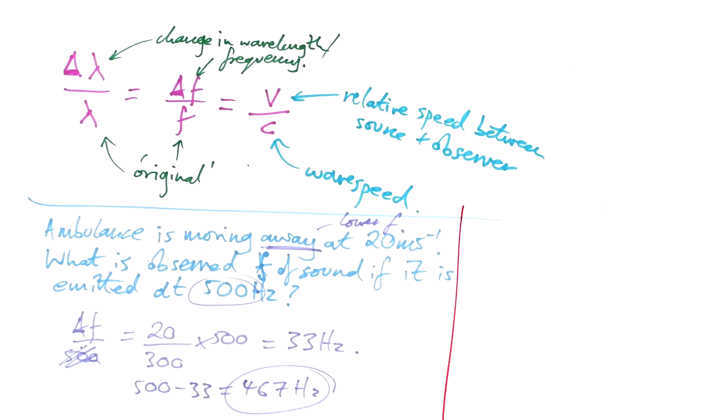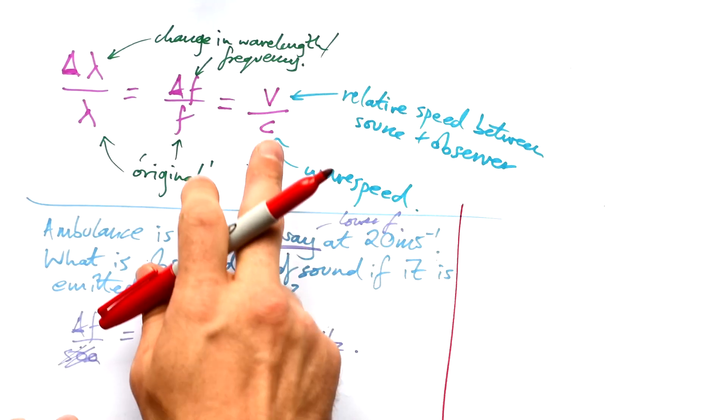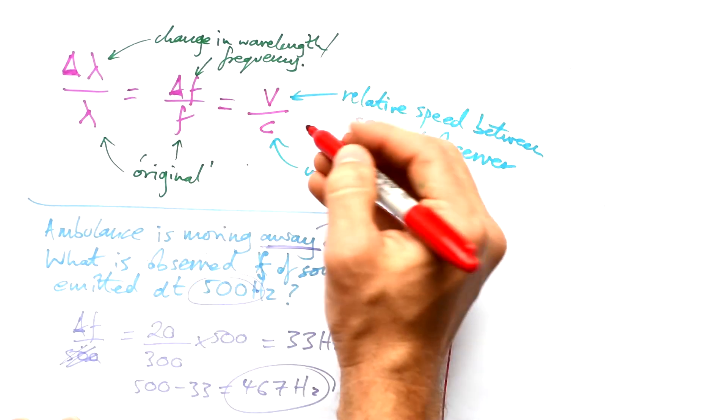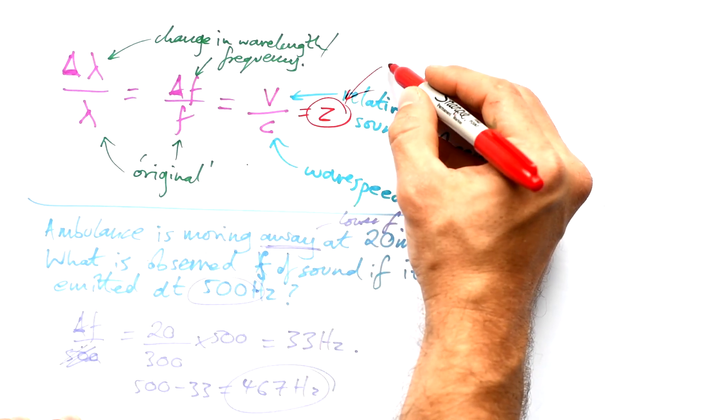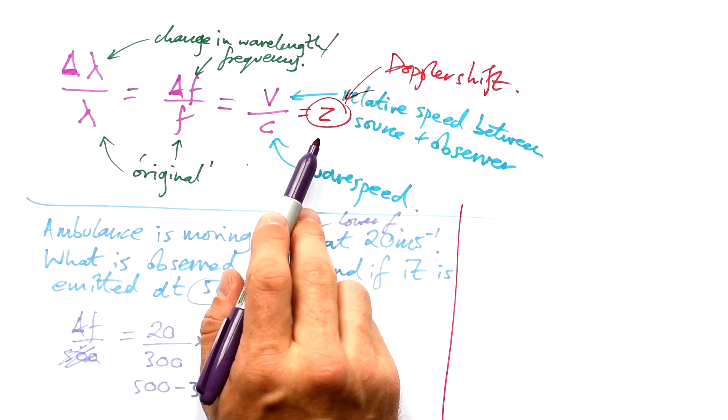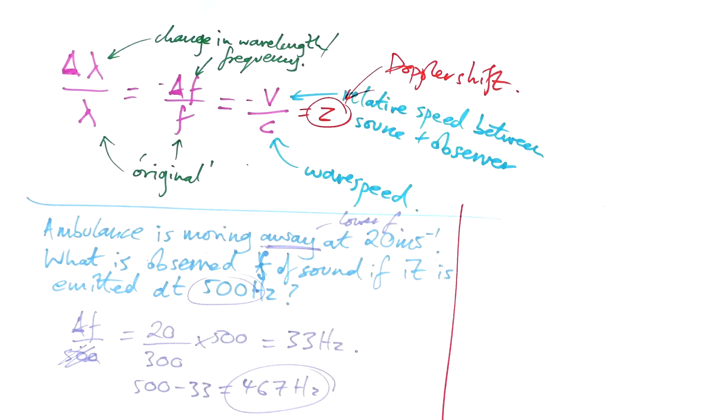Now the same thing can be applied to galaxies, but more often than not we just use wavelength, we don't use the frequency of the light. Incidentally this ratio here has its own special name. It's given the symbol z. That is just Doppler shift. Strictly speaking, Doppler shift is minus v over c and minus delta f over f. It's actually the same as delta lambda over lambda. Don't worry about that too much though, because it's just the magnitude that we're concerned about.